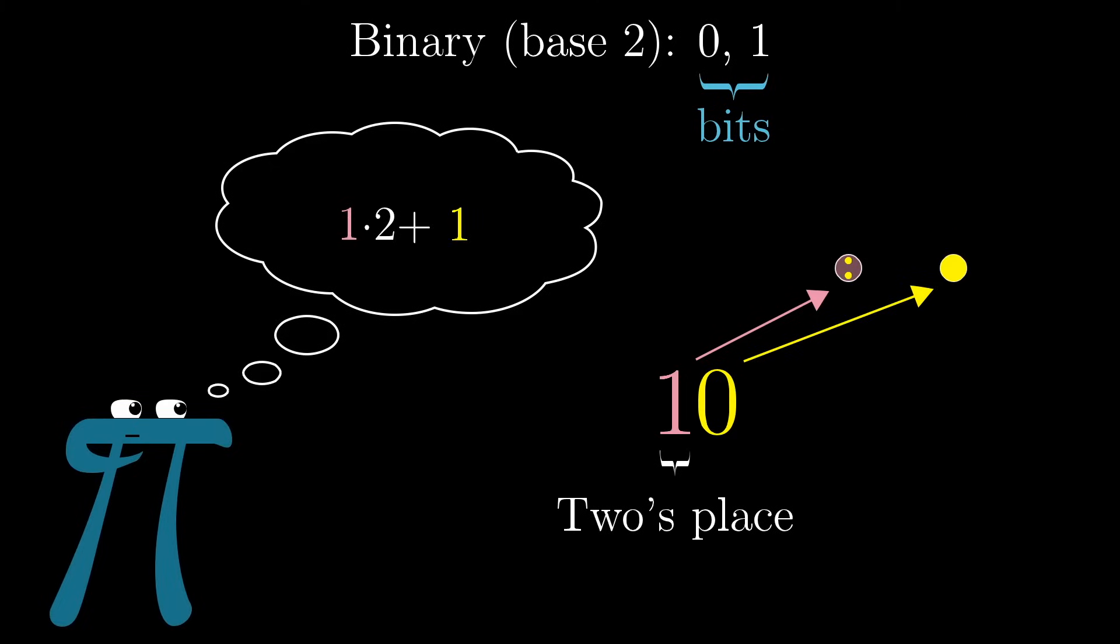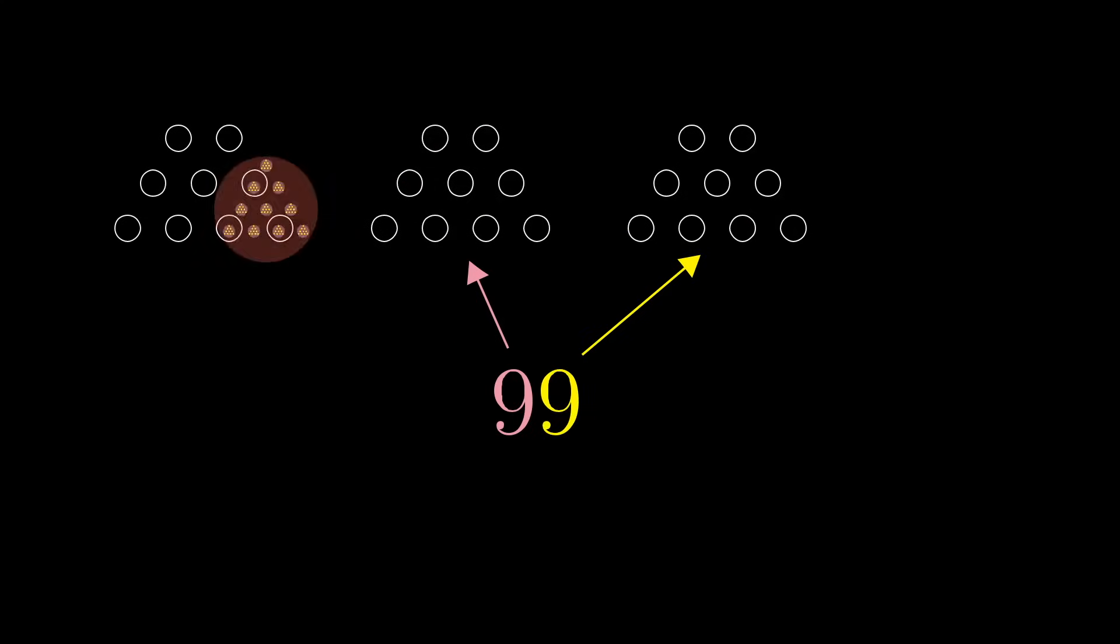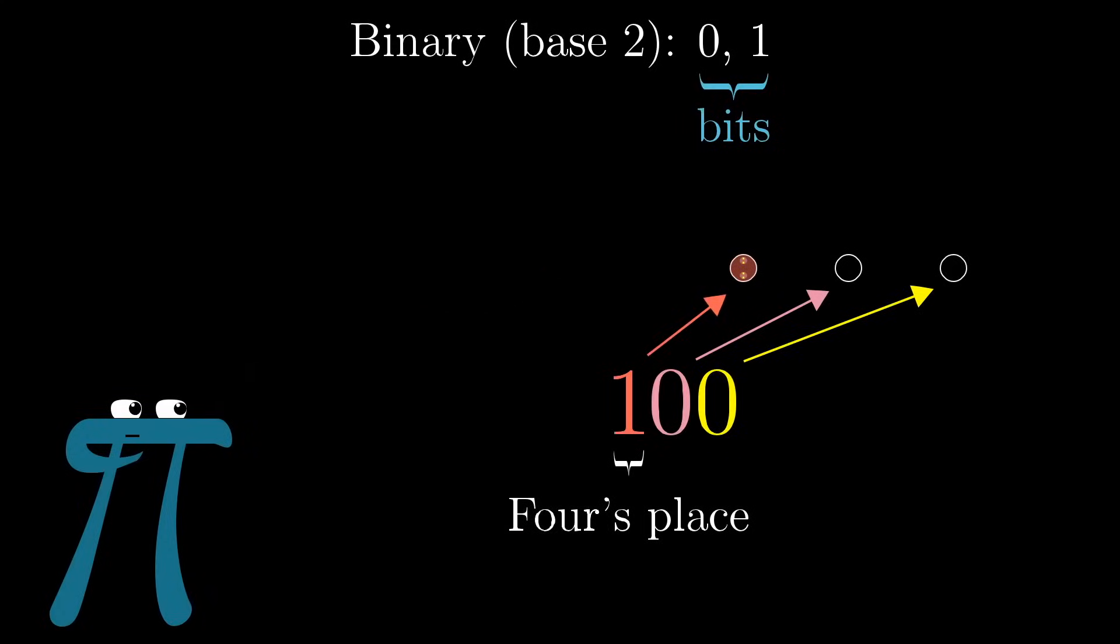Then, increment up to 1, 1, which represents 3, and already you have to roll over again, and since there's a 1 in that 2's place, that has to roll over as well, giving you 1, 0, 0, which represents 1 group of 4 plus 0 groups of 2 plus 0. In the same way that digits in base 10 represent powers of 10, bits in base 2 represent different powers of 2. So instead of talking about a 10's place, a 100's place, a 1000's place, things like that, you talk about a 2's place, a 4's place, and an 8's place.